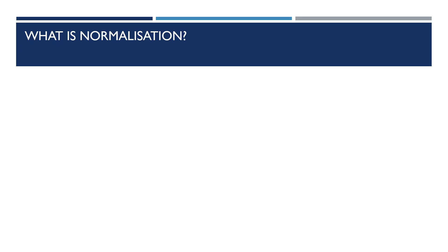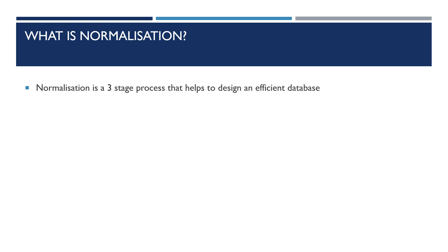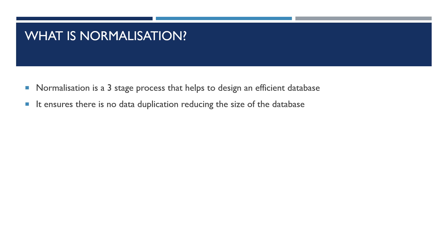Normalization is a three-stage process that helps to design an efficient database. It ensures there is no data duplication, reducing the size of the database. The fact that data is not duplicated means it will always be consistent.